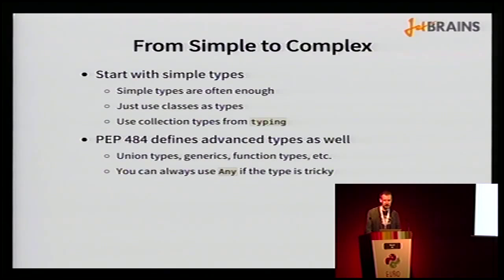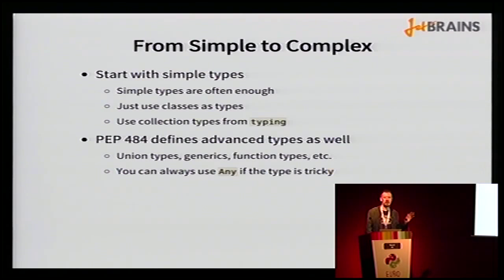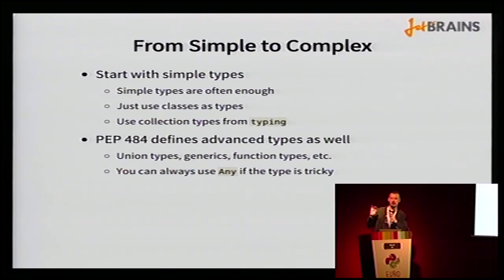Another tip: start with simple types. In most cases it's enough to use types like str, int, and other built-in types. You can use built-in collection types like list or dict. If you want to specify the types of elements inside your collection, use the generic collection types from the typing module — the uppercase versions like Dict. PEP 484 defines some advanced type constructs too, but use them only when you really need them. You can always use Any if a particular type is tricky to express.